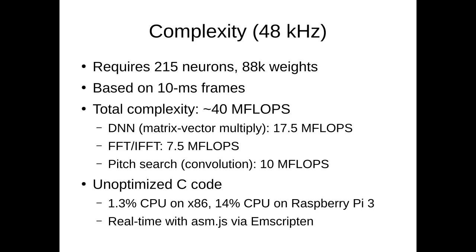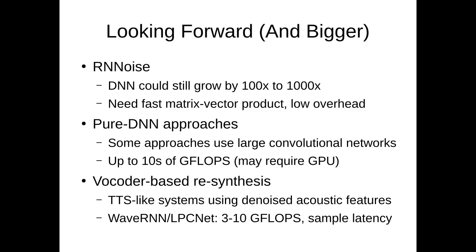Looking forward, RNNoise is really a minimalistic solution. Its DNN is really quite small compared to other approaches, but in the future you could see systems where it would grow by a factor of 100 or even 1000. It is mostly made of matrix-vector products, and especially if we grow the DNN, the FFTs will become negligible. So if we want it to run in real time, we need low overhead because we need many of these matrix-vector products every second.